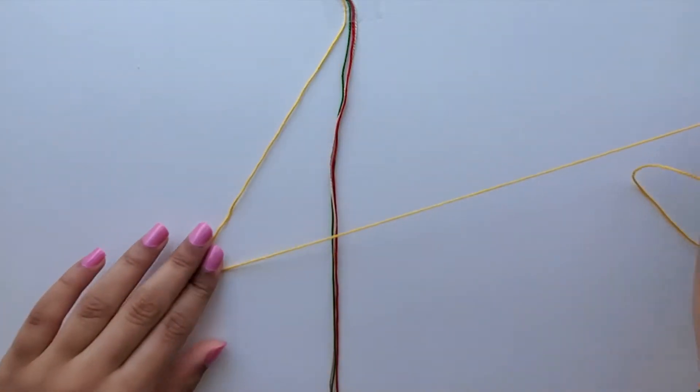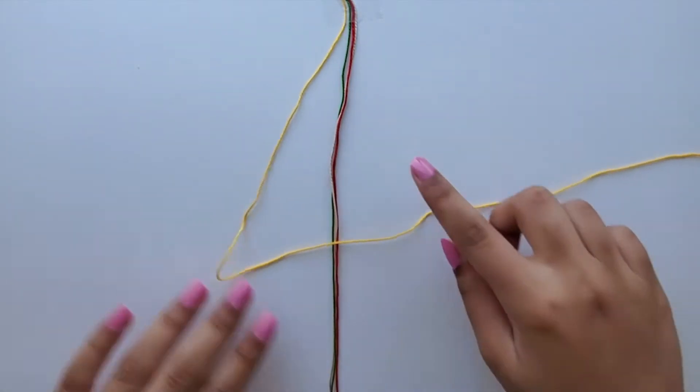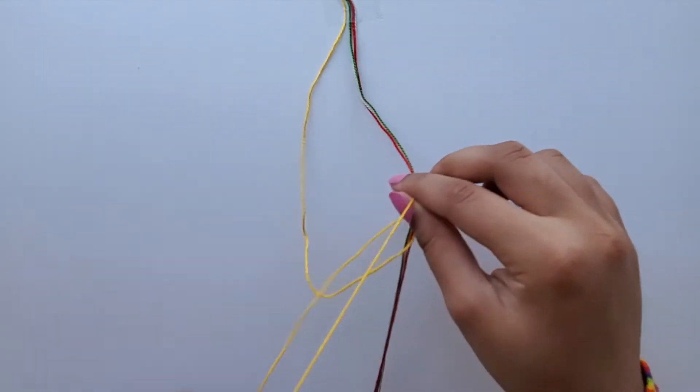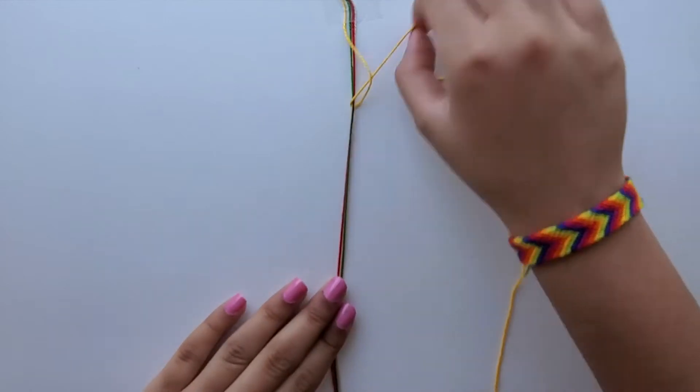To make this loop, take your left string and make a four knot. To make a four knot, fold one of your strings over to make a four and then take that string through the hole and pull it up to the top.